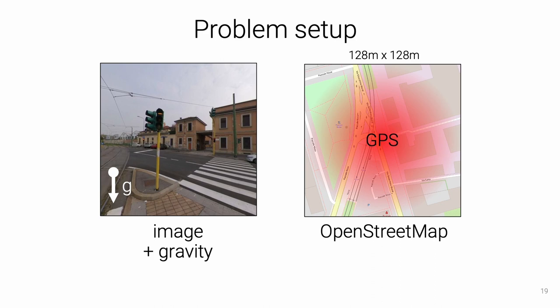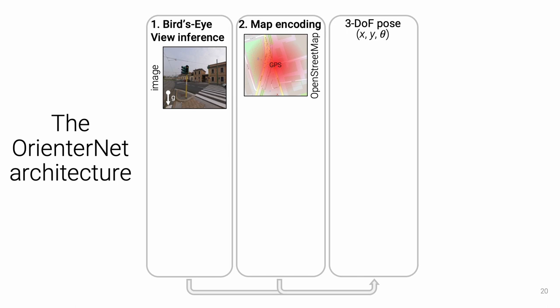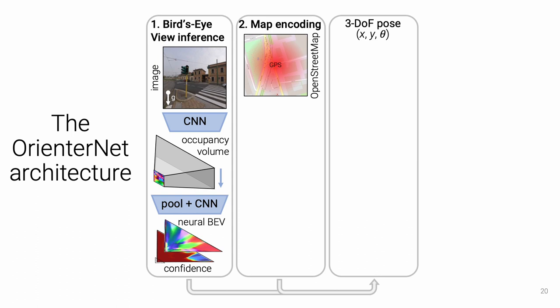OrientInternet estimates the pose of a query image with known camera intrinsics given OpenStreetMap data for a local area centered at a coarse location prior, for example, a noisy GPS position. First, a convolutional neural network infers a 3D occupancy volume from the image. This occupancy maps image features to a bird's eye view (BEV) by lifting them to 3D and pooling them vertically. This results in a neural BEV with an associated confidence map.